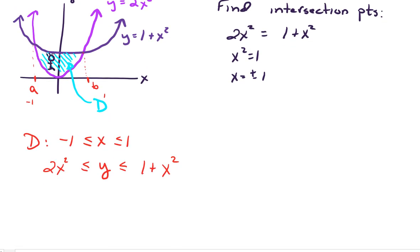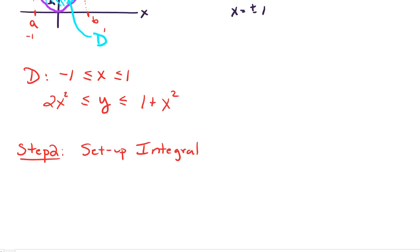Step 2, we want to set up the integral. Set up the integral. And for our integral, we need to put the honest-to-goodness numbers on the outside, right? So for a type 1 region, that means we're going to have X equals negative 1 to 1. And then our next layer in for the integrals is going to be Y equals 2X squared up to 1 plus X squared.